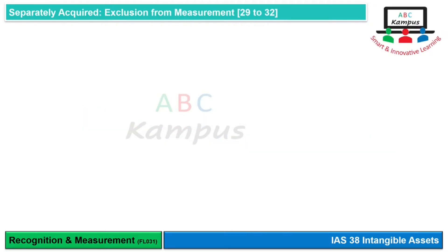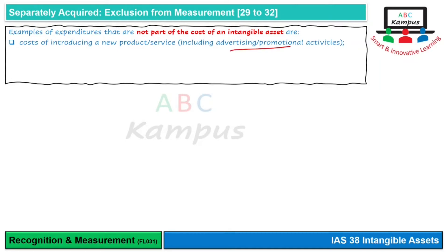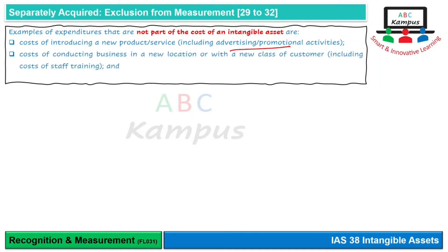Certain expenditures are not part of the intangible asset's cost. These include costs of introducing a new product such as advertising and promotional activities, costs of conducting business in a new location or with a new class of customer such as staff training, and administrative and other general overheads — as none of these are directly attributable to the intangible asset.